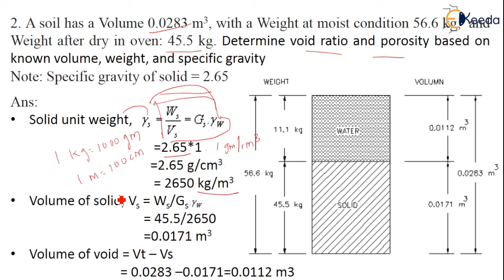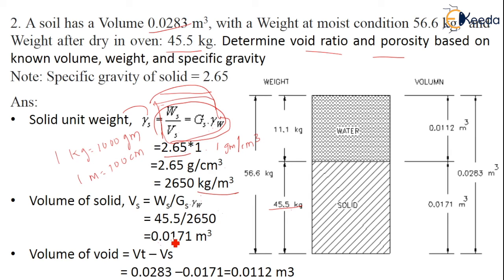The volume of solids Vs is calculated as Ws divided by (Gs into gamma_w). Ws is 45.5 kg, and Gs into gamma_w is 2650 kg/m³. The kg units cancel, giving a volume of solids of 0.0171 m³.